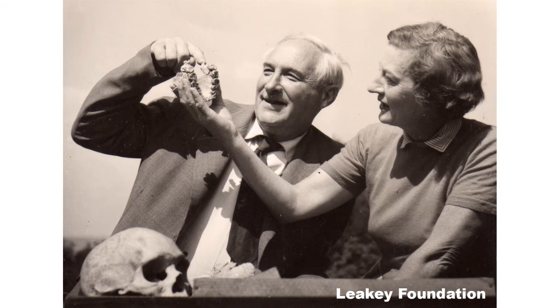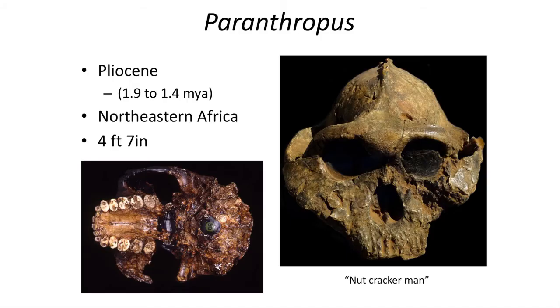The first specimen was discovered by Mary Leakey in 1959. Her work on early fossil humans in East Africa with her husband Louis Leakey led to many other discoveries, including a fossilized trackway mentioned in a previous video. Recent studies of Paranthropus isotopes in the teeth indicate it was likely living on a diet of grasses and leaves, or other C4 plants. Although sometimes called the nutcracker man, the genus likely specialized in shearing grasses and leaves and may have been completely vegetarian.